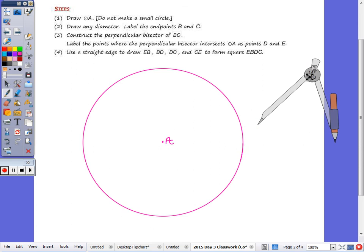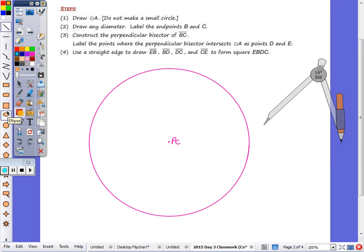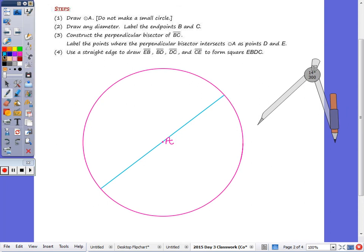Move that off to the side. I don't want to close that because I'll use it again. You're going to draw, in step 2, any diameter. So take your straight edge, you want to line it up so that it goes through the center. So here's the diameter. I labeled the endpoints, the diameters B and C.